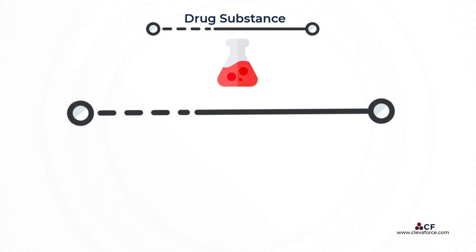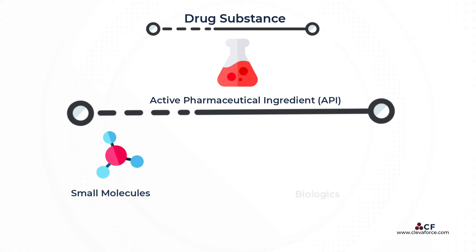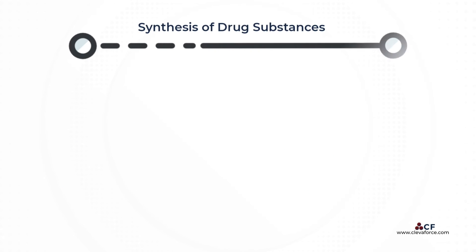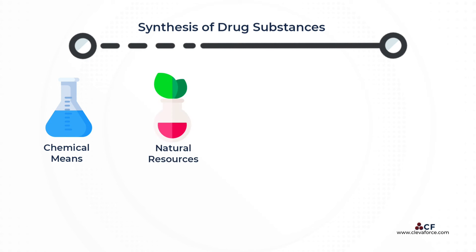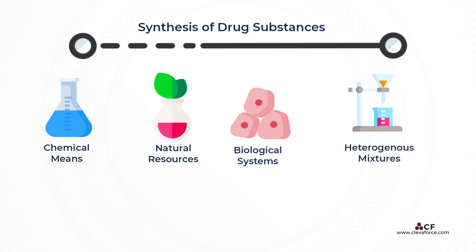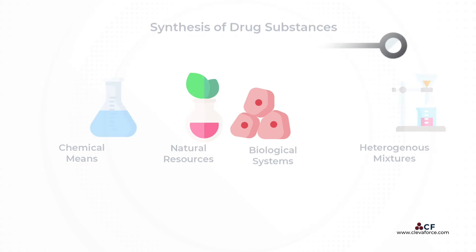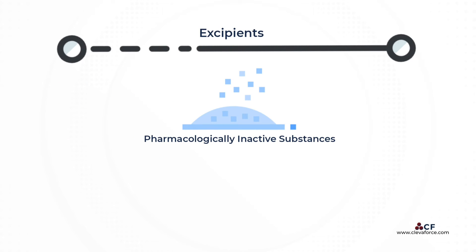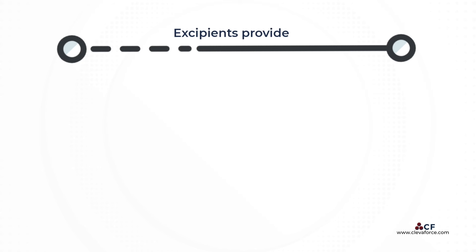Simply put, drug substances are the main pharmaceutically active component of a medicinal product, and thus they are also known as active pharmaceutical ingredient (API). They can be small molecules or biologics. They can be synthesized by chemical means, extracted from natural resources, expressed in biological systems, and/or separated from heterogeneous mixtures. Excipients are pharmacologically inactive substances that are generally used as a carrier of the API in the drug.